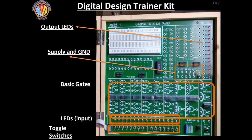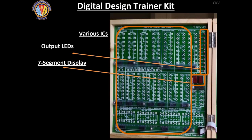This is the digital design trainer kit. Here you can see the basic logic gates like AND, OR, NOR, NAND gates for two input and three input, and there are input LEDs, toggle switches, and output LEDs. There will be a supply and ground as well. On the other side of the kit you can see the seven-segment display, output LEDs, and various ICs.